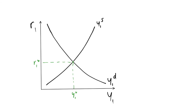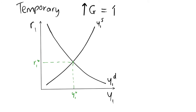So we've looked at what happens with a permanent change in government spending. Now what happens when we have a temporary change — specifically, a temporary increase in government spending? This again has to be financed by an increase in taxation. Although the increase in government spending is only in this period, we have assumed a balanced budget, so the increase in lump sum taxation also comes in this period. We don't finance it by changing taxes in the future — every period, total government spending equals total taxation.